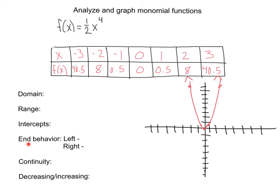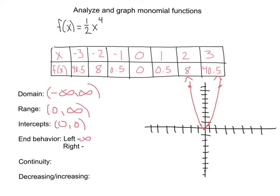Let's go ahead and analyze this, talking about some of the concepts from the last video. Our domain is all possible x values — there aren't any restrictions, so the domain is negative infinity to positive infinity. Our range: the first y value starts at zero, there are no y values in the negative area, so the range is zero to positive infinity. Our intercept looks like we've got one intercept right here, which is both the x and y intercept — the point zero, zero. End behavior: as we go to the left it's approaching positive infinity, and as we go to the right it's also going to positive infinity.